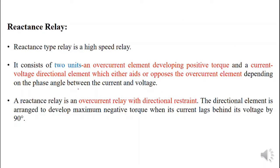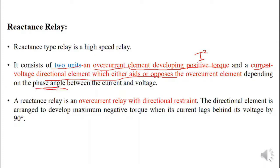The second type of distance relay is the reactance relay. Similarly, it will contain two units. The first operating quantity is the overcurrent element, which produces positive torque directly proportional to the square of the current. The second unit is a current-voltage directional element, which will either aid or oppose the overcurrent element depending on the angle between voltage and current. A reactance relay is also called an overcurrent relay with a directional element; the directional element develops maximum negative torque when the current lags behind the voltage by exactly 90 degrees.